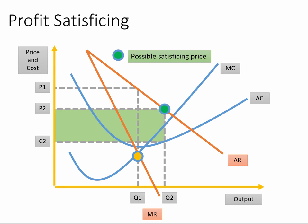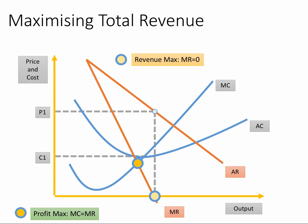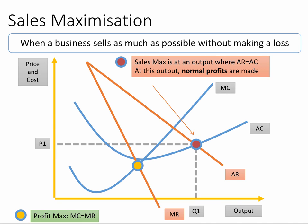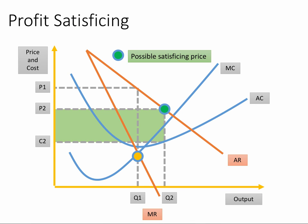Just to run through these three diagrams quickly again: revenue maximisation — MR is zero; sales maximisation — average cost equals average revenue; satisficing — any price which lies between the profit-maximising price and the breakeven price. Lots of options here.